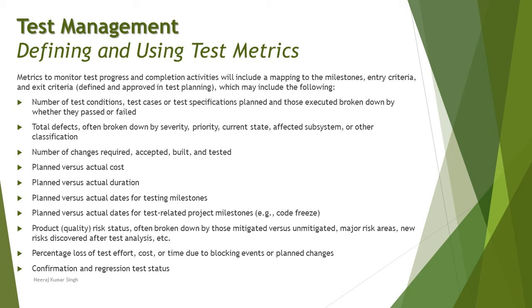Additional metrics at project end include: product quality or quality risk status — how much risk was mitigated and whether any risk remains unmitigated — broken down by mitigated versus unmitigated major risk areas and new risks discovered after analysis. Also tracked is percentage loss of test effort, cost, or time due to blocking events or planned changes, as well as confirmation and regression test status. These metrics stand good for exit criteria and throughout the process.